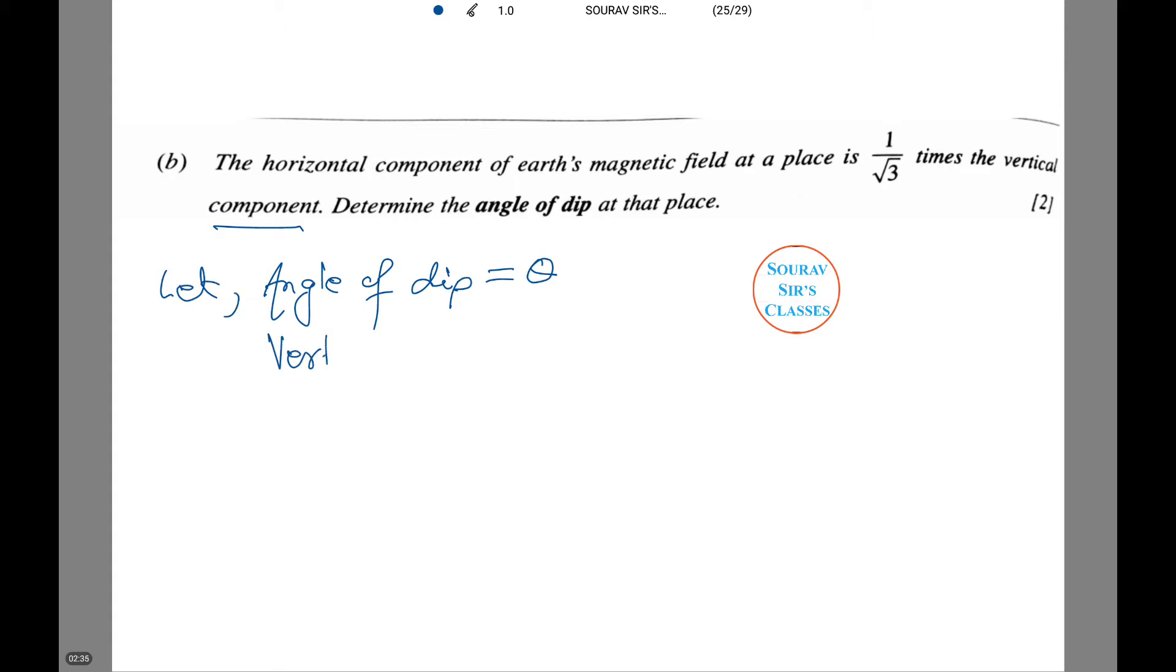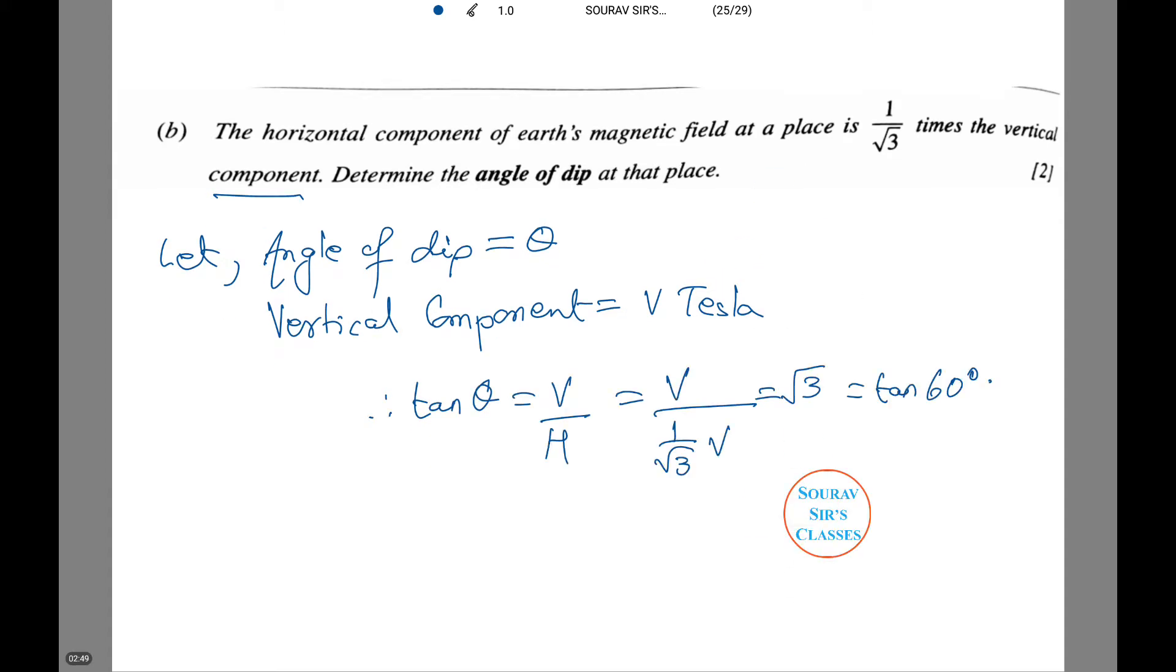Therefore the vertical component is equal to V. Therefore tan theta equals V by H, which equals to V by 1 by root 3 V, which equals to root 3, which is equal to tan 60 degrees.